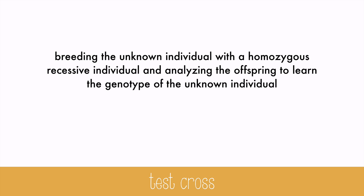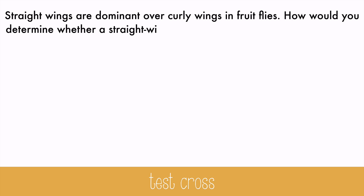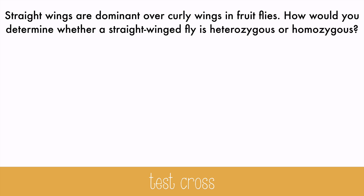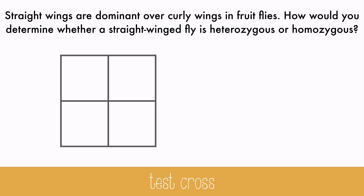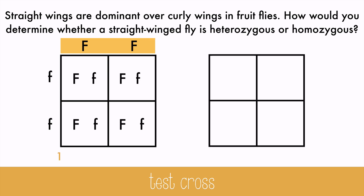Let's look at an example. Straight wings are dominant over curly wings in fruit flies. How would you determine whether a straight-winged fly is heterozygous or homozygous? Both the homozygous dominant and heterozygous genotypes will make straight-winged flies. If we breed this unknown straight-winged fly with a curly-winged fly, the recessive form, we could get two possibilities. If the fly is homozygous dominant, all of the offspring will be straight-winged.